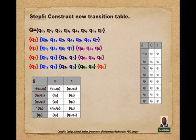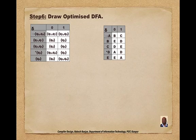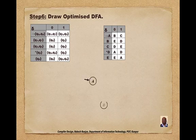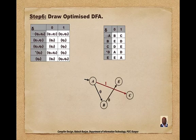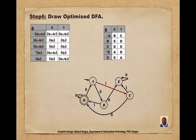Using this transition table we can create the optimized DFA. We rename the groups: {q0, q4} as A (initial state), {q1, q7} as B, {q3, q5} as C, {q2} as D (final state), and {q6} as E. According to the transition table we draw the corresponding transitions, giving us the final optimized DFA.